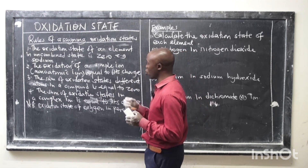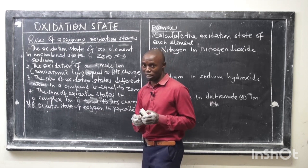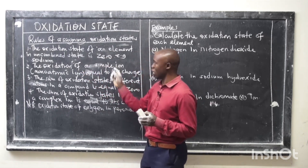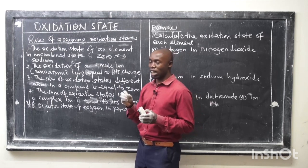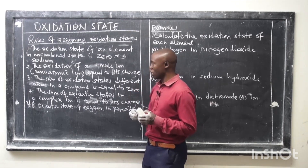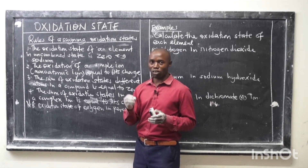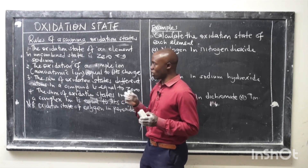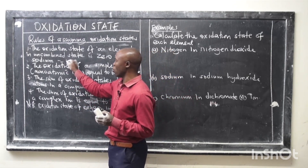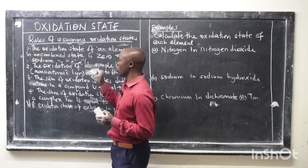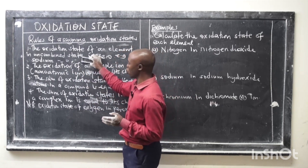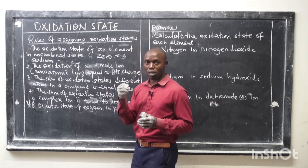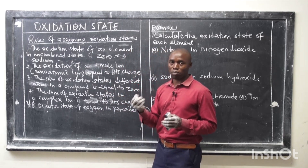Now let's dive into the rules of assigning oxidation states. The first rule is that the oxidation state of any element in its free or uncombined state is zero. So the oxidation state of sodium as a free element is zero, and the oxidation state of chlorine as a free element is also zero, because it has not formed any ion, neither has it bonded yet.